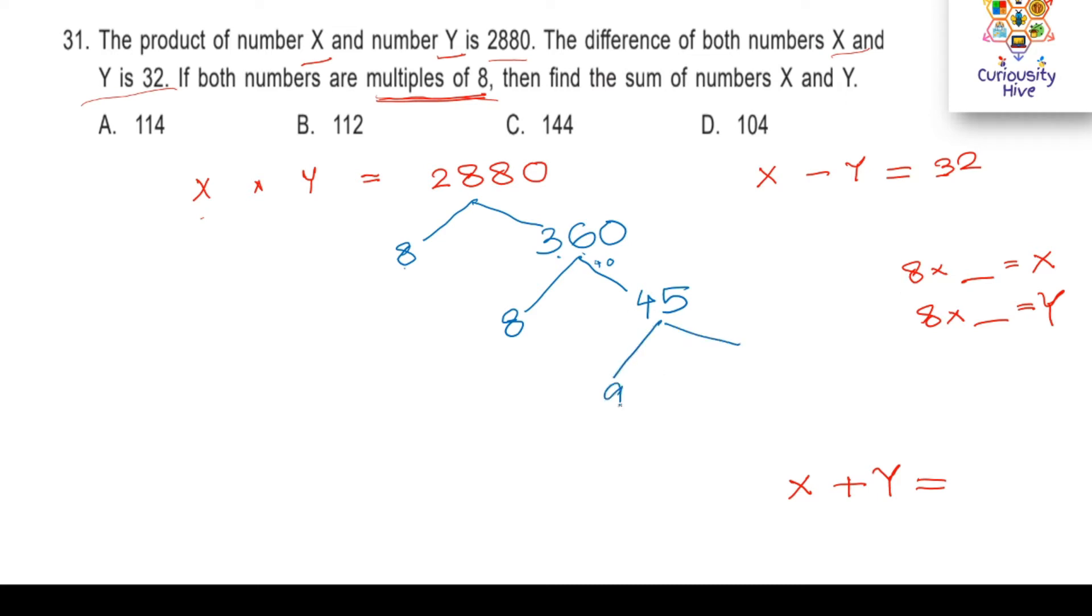The two numbers would be the combination of 8 and 9 will be the first number and the combination of 8 and 5 will be the second number. 8 times 9 would be x and 8 times 5 would be y. In that case, x will be equal to 72 and y will be equal to 40.